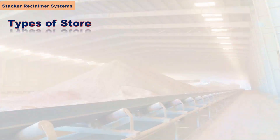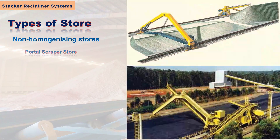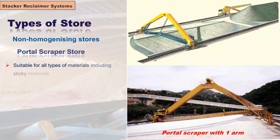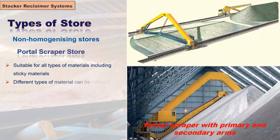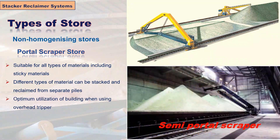Type 2: Non-homogenizing stores. The portal scraper store's most important advantages include: suitability for all types of materials including sticky materials, ability to stack and reclaim different types of material from separate piles, optimum utilization of building when using overhead tripper, easily expandable store capacity, and low initial cost.